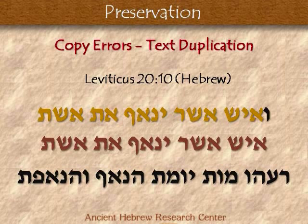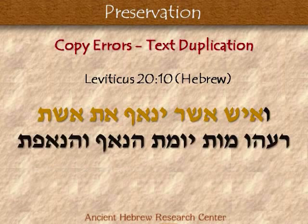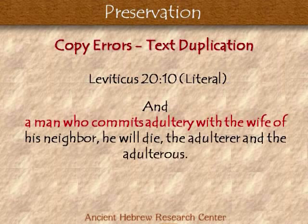This is very common in the text — there are actually quite a few instances of it. So if we remove one of those accidental duplications, now we have 'beish asher yinaf et eshet rehu, mot yumat, hanolef vehanafet' — 'And a man who commits adultery with a wife of his neighbor, he will die — the adulterer and the adulteress.'